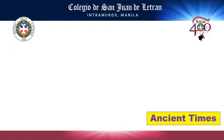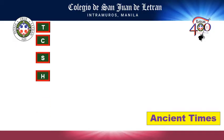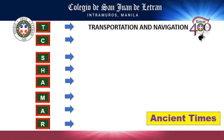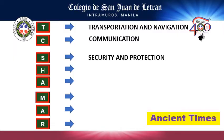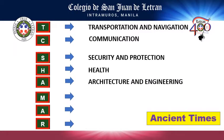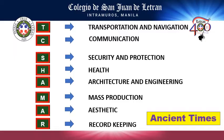During ancient times, the most encountered problems were the following. Just remember the acronym T.C. Shamar: T stands for Transportation and Navigation, C stands for Communication, S stands for Security and Protection, H stands for Health, A stands for Architecture and Engineering, M stands for Mass Production, A stands for Aesthetic, and R stands for Record Keeping.